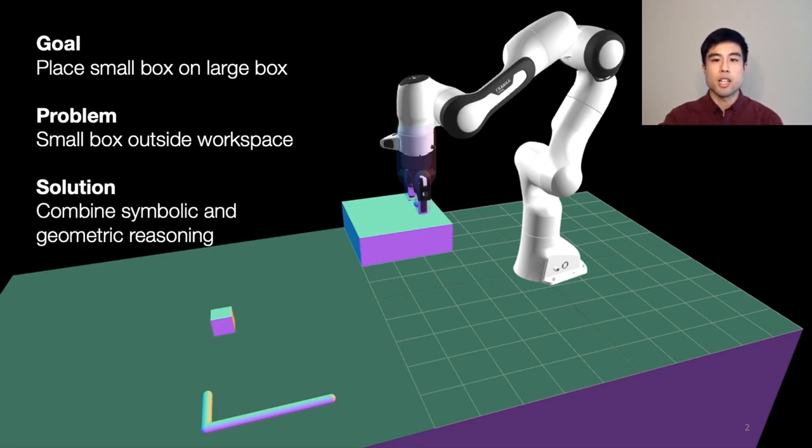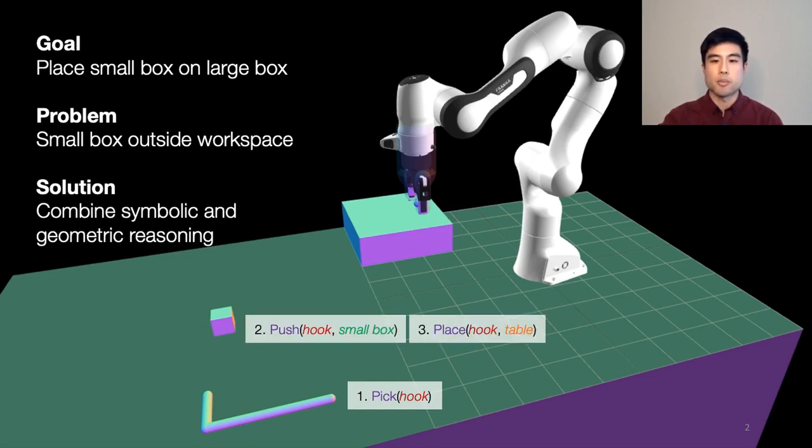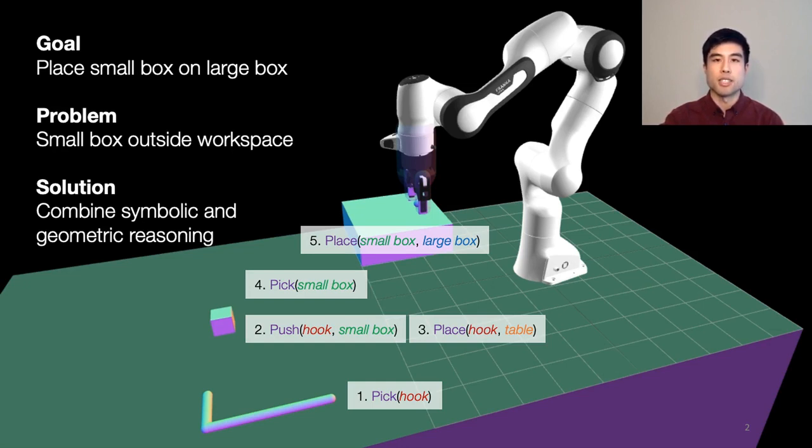By using symbolic reasoning, we could come up with a sequence of symbolic actions that might accomplish the goal, such as pick up the hook, use the hook to push the small box closer, place the hook on the table, and then pick up the small box and finally place it on the large box. Geometric reasoning helps us plan where to grasp the hook, how close to push the small box, and so on.